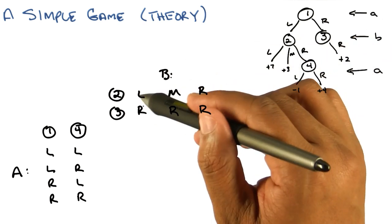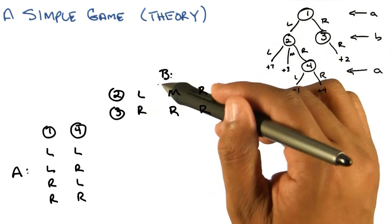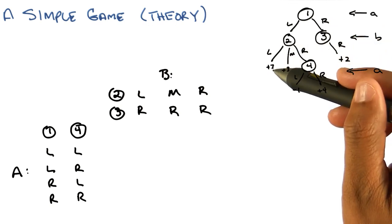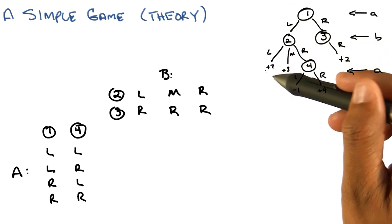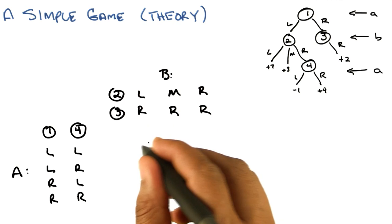And then, in this first strategy, B goes left in state two, which means we will end up going down this path, and the value there is plus seven. So, seven is in fact the value of this game with respect to A.